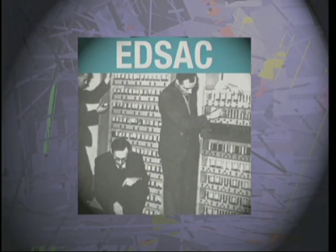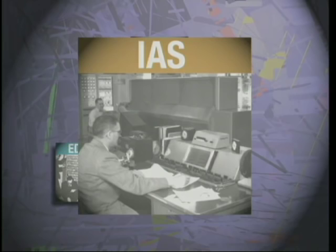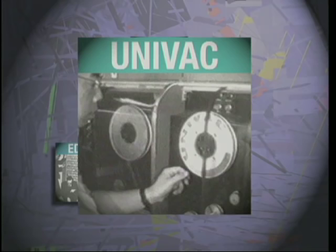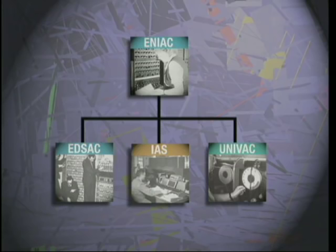The first branch is Cambridge University's EDSAC. Maurice Wilkes created the world's first operational computer; it helped stimulate the formation of a British computing industry. The second branch is the Institute for Advanced Studies Architecture computers — a dozen or so machines were made at various laboratories using their basic design, and others including IBM built variants. The final branch is the Eckert-Mauchly Computer Corporation, which ended up as the Remington Rand UNIVAC Division of Sperry Rand, producing UNIVAC One, the first successful U.S. commercial computer.